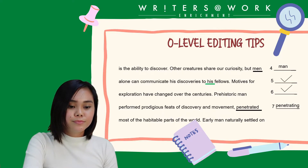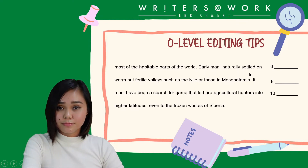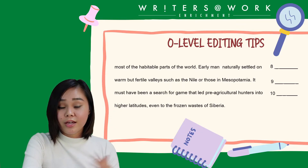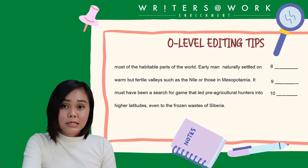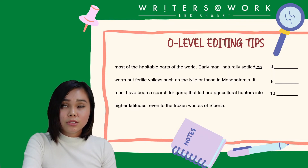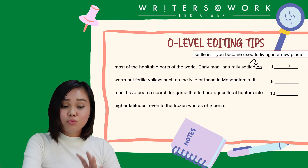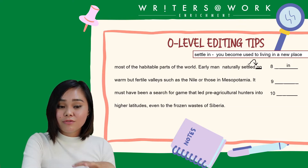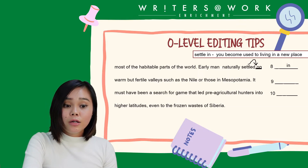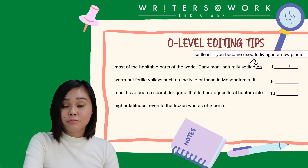Most of the habitable parts of the world, early man naturally settled on. The error here is the word 'on'. When you analyze it with the word 'settled', you need to ask: is 'on' the correct word to pair with 'settled' to create the correct phrasal verb? No — it should be 'settled in', because when you settle in, it means you become used to living in a new place. So: early man naturally settled in warm but fertile valleys such as the Nile or those in Mesopotamia.